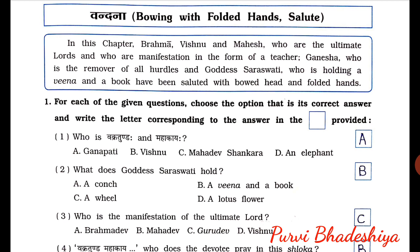Second one: what does Goddess Saraswati hold? The answer is B — a Veena and a Book. Third number: who is the Manifestation of the Ultimate Lord? The answer is C — Gurudev.